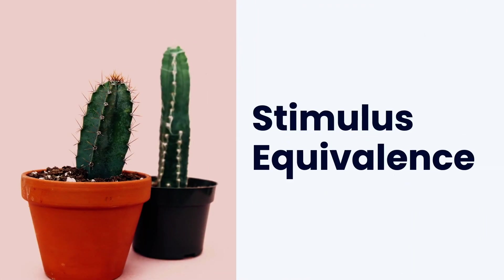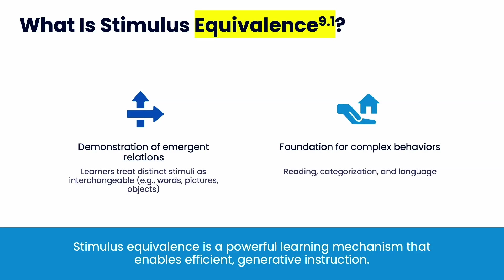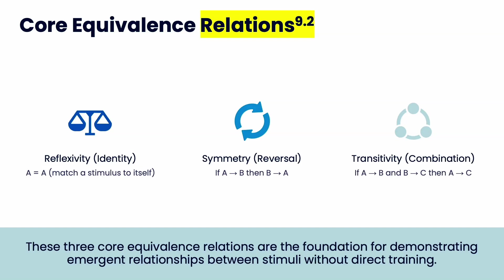Welcome back. We're going to talk about stimulus equivalence. This builds upon the discrimination training lecture we just did and takes it a step farther, getting more into conditional discriminations and what that looks like in matching to sample. Stimulus equivalence is the demonstration of emergent relations through discrimination training — eventually people start connecting things that you never taught them together. It's really the foundation for all our complex behaviors: reading, categorization, language, communication, and social skills.